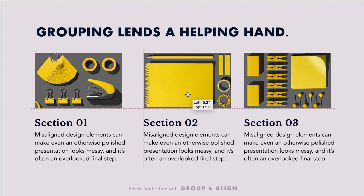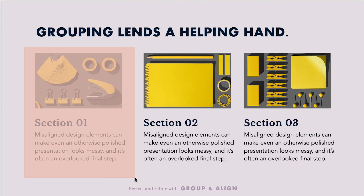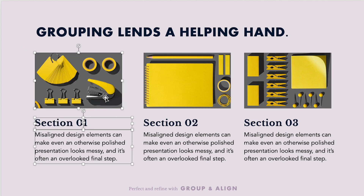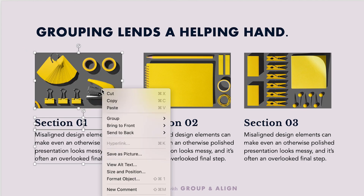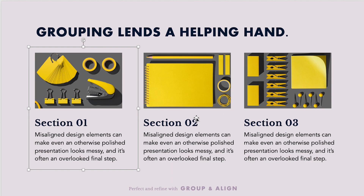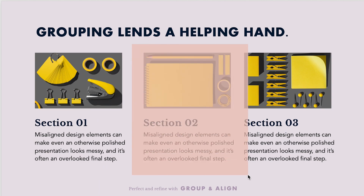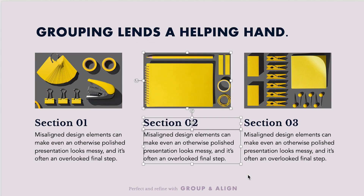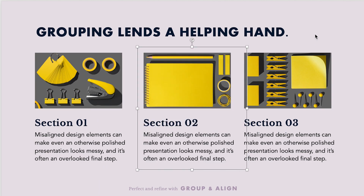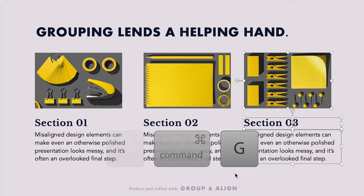So instead I'm going to select all the elements in my first column, right-click while hovering over it, and click Group. Now I'll do the same for the second and the third column but I'll use the keyboard shortcut Option+Command+G.